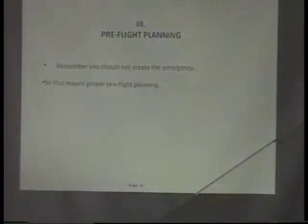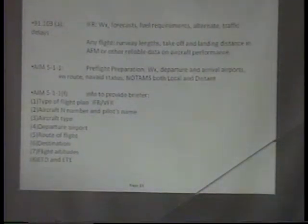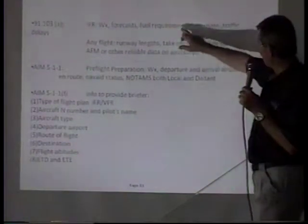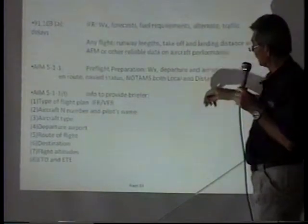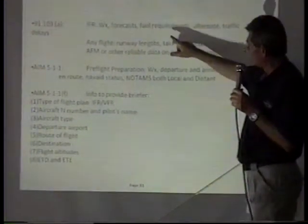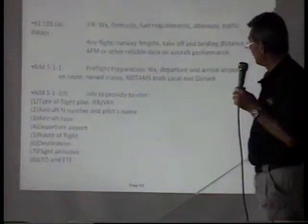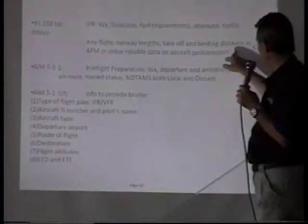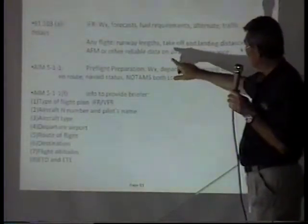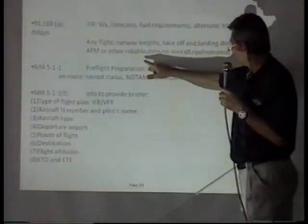We're going to get into pre-flight planning because some emergencies, at least, are created by inadequate pre-flight planning. Under 91.103A, we're supposed to do for IFR: weather, forecast, fuel requirements, alternates, and traffic delays. That's what 91.103A says for IFR. For any flight, the runway leads takeoff and landing distance in the aircraft flight manual or other reliable data on aircraft performance.